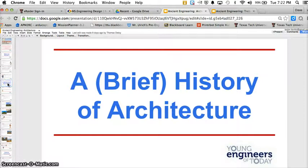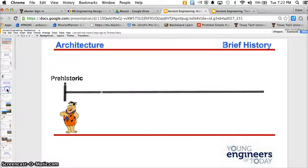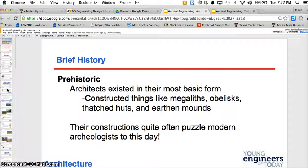Now, here we're going to look at a brief history of architecture. Prehistoric. Let's begin. Architects exist in their most basic forms. We're looking at obelists, huts, mounds, megaliths. Their constructions quite often puzzle modern archaeologists just to this day, because we don't know exactly what they were doing with these.